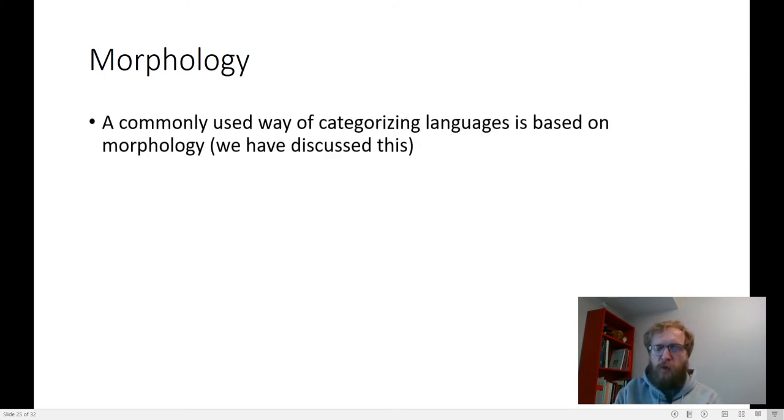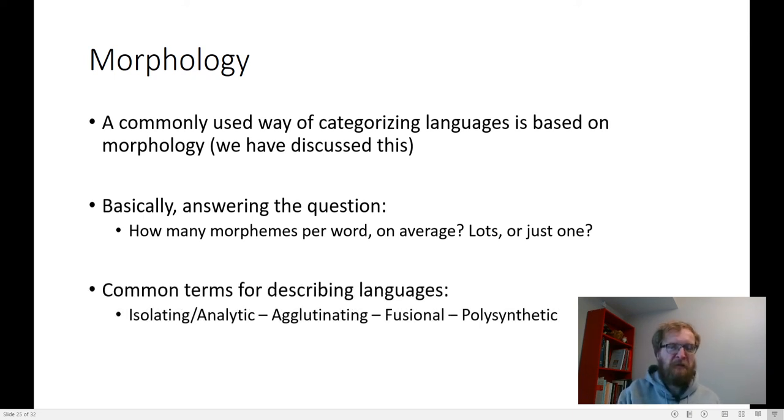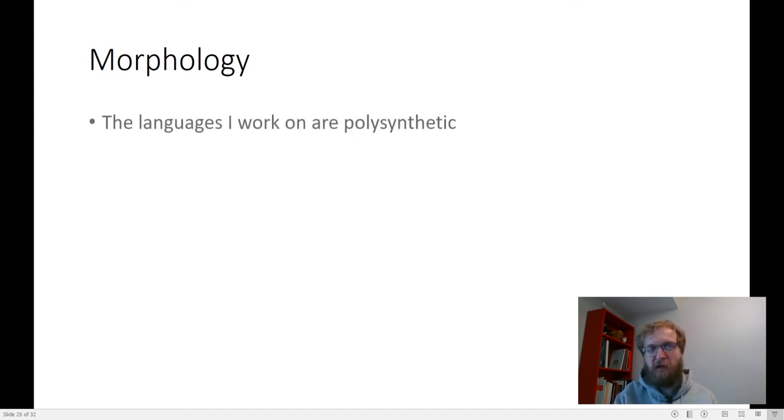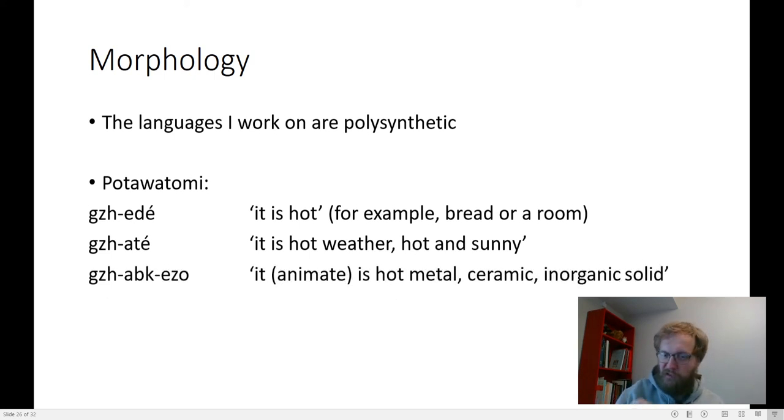In terms of morphological typology, we've talked about that already a little bit, so I won't rehash this. But basically, one of the most common ways of doing morphological typology is trying to answer the question, how many morphemes do you get per word on average? A whole bunch? Not very many. So those are where we talked about things like polysynthetic languages. The languages that I work on are, of course, polysynthetic. So Potawatomi has these wonderful words. Gjede, it is hot, for instance, something that you could touch or a room is hot. Gjate, it is hot weather if the sun is shining. If the sun's not shining, you've got to use a different word. Gjabkizil, it's hot metal, some sort of hot inorganic solid like glass or ceramic. Gjabote, it's hot liquid. In each of these cases, the gj means hot. And you get a little more information from all the other words that you add together.